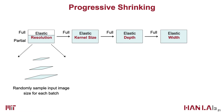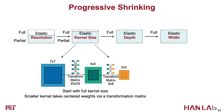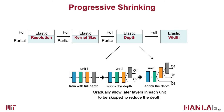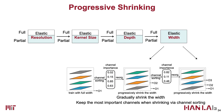Specifically, for the resolution dimension, we randomly sample input image size for each batch throughout the whole training process. For the kernel size dimension, we start with the full kernel size, then support smaller kernels by taking centered weights via a transformation matrix. For the depth dimension, we gradually allow later layers in each unit to be skipped to reduce the depth. Finally, for the width dimension, we keep the most important channels according to the L1 norm when shrinking the width.